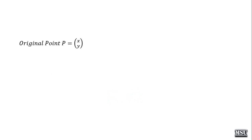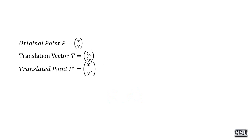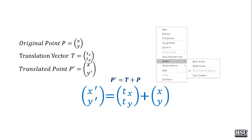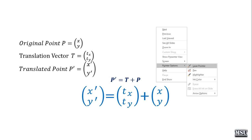The original point p equals (x, y), translation vector t equals (tx, ty), and translated point p dash equals (x dash, y dash). Normally all these transformations are performed using matrix representation: p dash = t + p. In matrix form, [x dash, y dash] = [tx, ty] + [x, y].